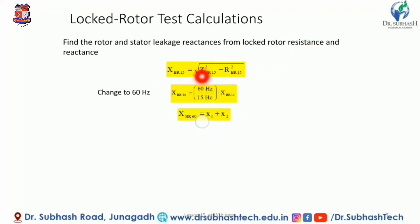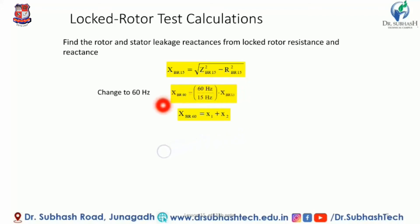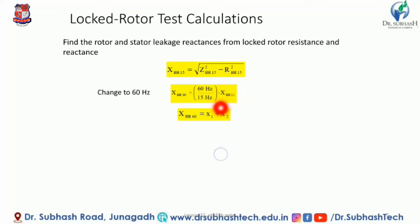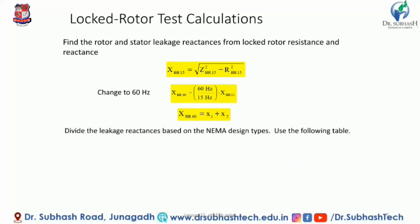The blocked rotor resistance is: R_BR = Z_BR15² − X_BR15², and X_BR = √(Z_BR15² − R_BR15²). To convert to the rated frequency of 60 Hz: X_BR60 = (60/15) × X_BR15. Then X_BR60 = X1 + X2, giving the combined stator and rotor leakage reactance values.